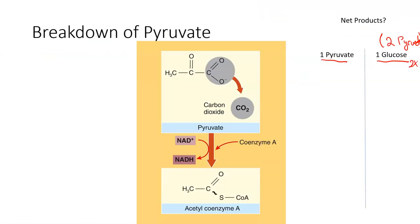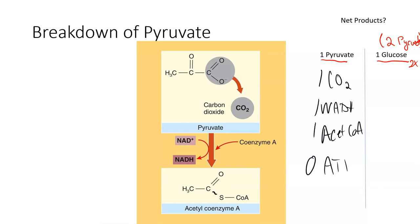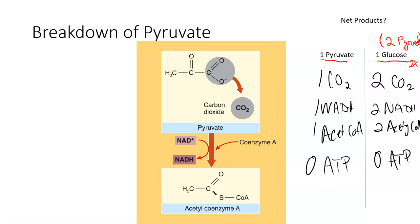Breakdown of pyruvate — per one molecule of pyruvate: one CO2, one NADH, one acetyl-CoA, and zero ATP. Per molecule of glucose, it's doubled: two CO2, two NADH, two acetyl-CoA, and still zero ATP. Make sure you understand why you have double the number per molecule of glucose compared to per molecule of pyruvate, and understand how the carbons are moving and how much we produce per pyruvate versus per glucose.